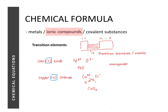For one final example: manganese(IV) oxide. The Roman numeral IV tells us manganese has a charge of 4+, and oxide means O²⁻. Balancing the charges — 4 and 2 — and reducing to the simplest ratio, the formula is MnO₂.